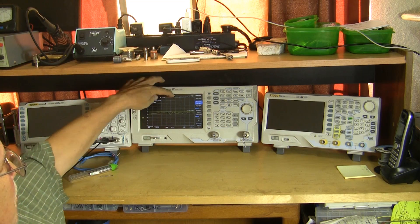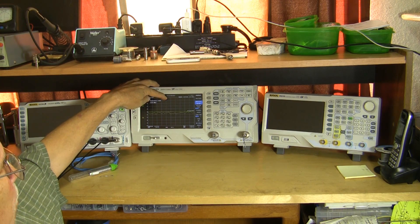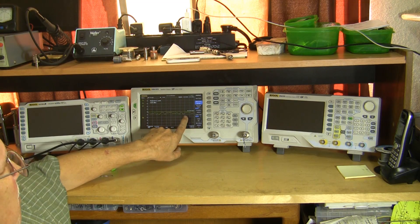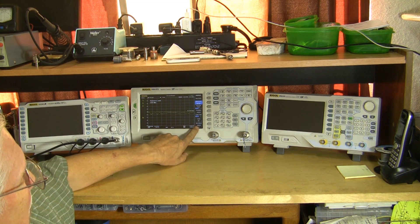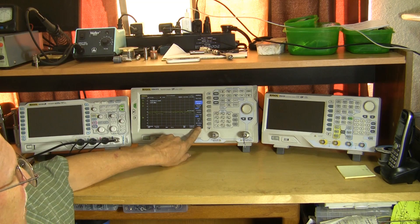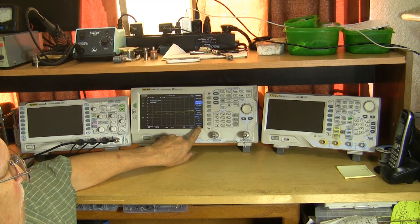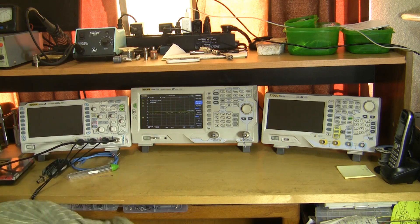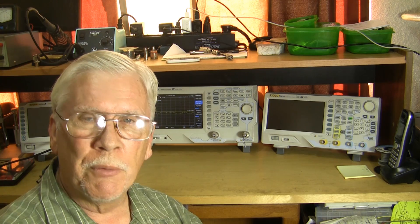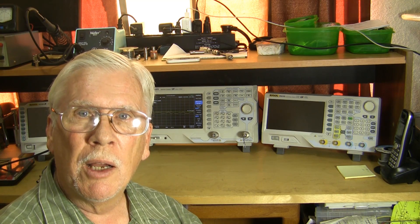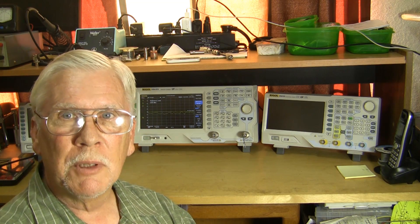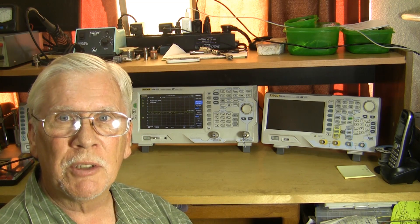I've set this for a reference level of zero here, which is actually minus 40. Got a short piece of wire here to pick up the signal. I just punched the reference offset button and set it to 40 dB to make the reference here zero. That way we can get a good look at the thing in terms of the actual dB down from the carrier. So let's take a look at it.